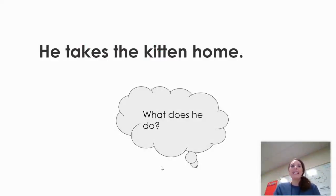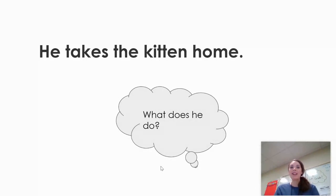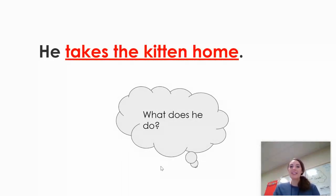Here's our next sentence: He takes the kitten home. The person that's doing the action is he, meaning Sam from the sentence before. What does he do? He takes the kitten home. Underlined in red, that is the predicate of our sentence. The subject is he, which is Sam from earlier.